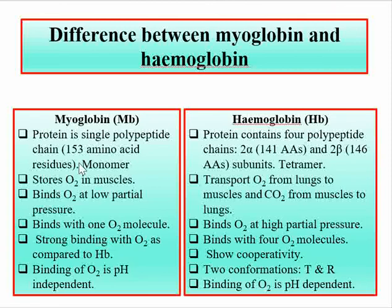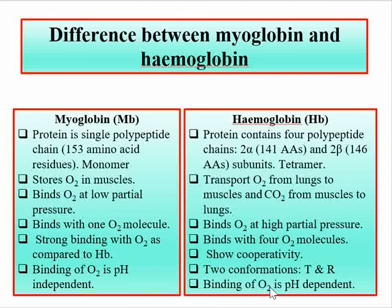Myoglobin shows stronger binding with oxygen compared to hemoglobin. Another key difference is that oxygen binding in myoglobin is pH independent, while in hemoglobin it is pH dependent — this is known as the Bohr's effect. The Bohr's effect describes how at higher pH, hemoglobin binds more oxygen, and at lower pH it binds less. Hemoglobin also exists in two forms: the T form (tense or deoxy form) and the R form (relaxed form). These are the main differences between myoglobin and hemoglobin.